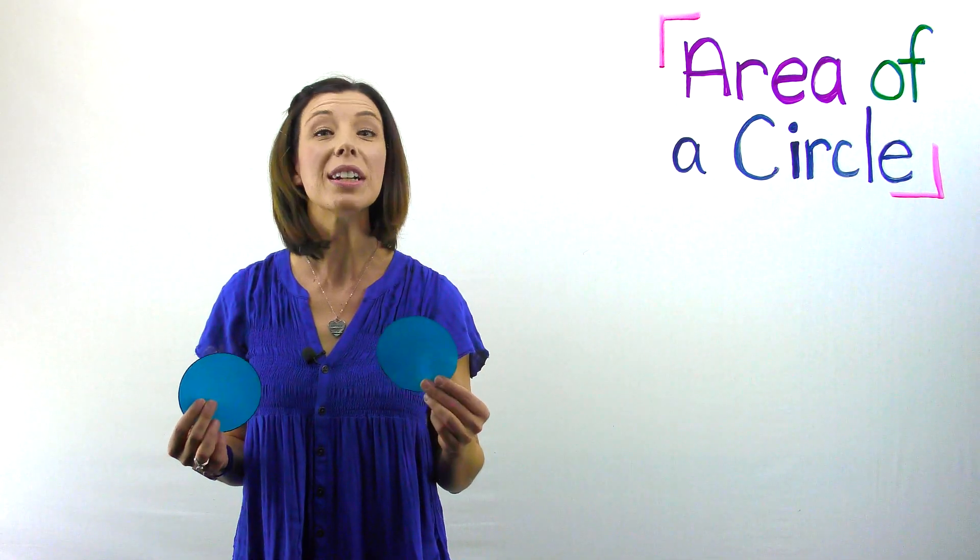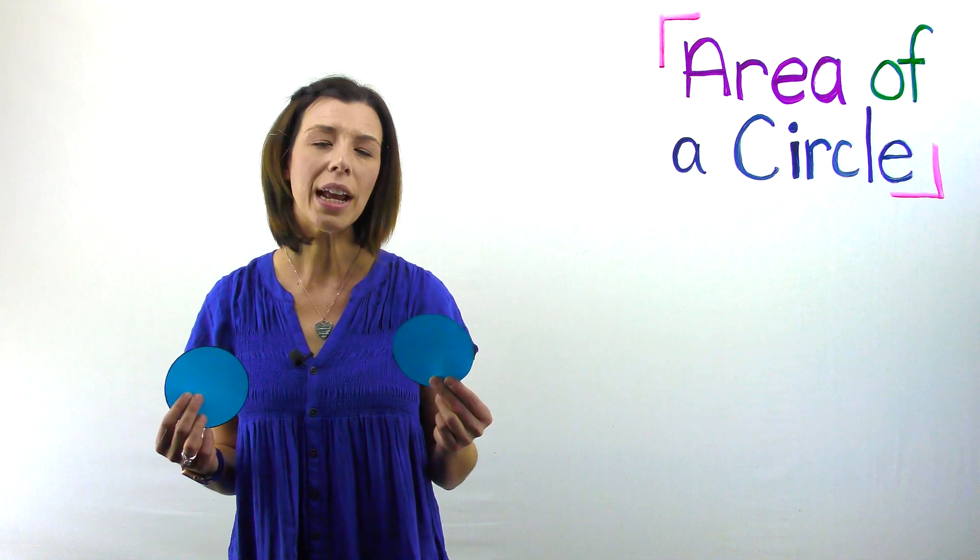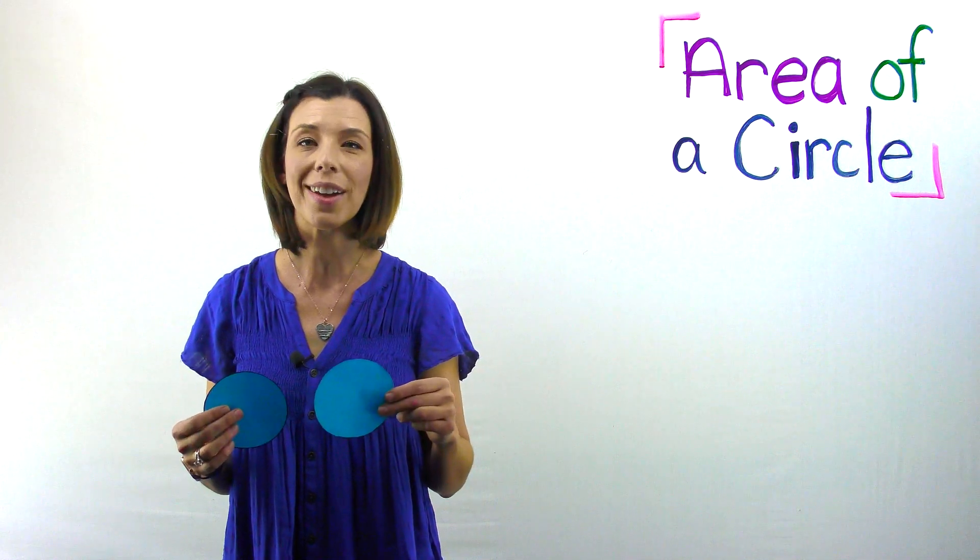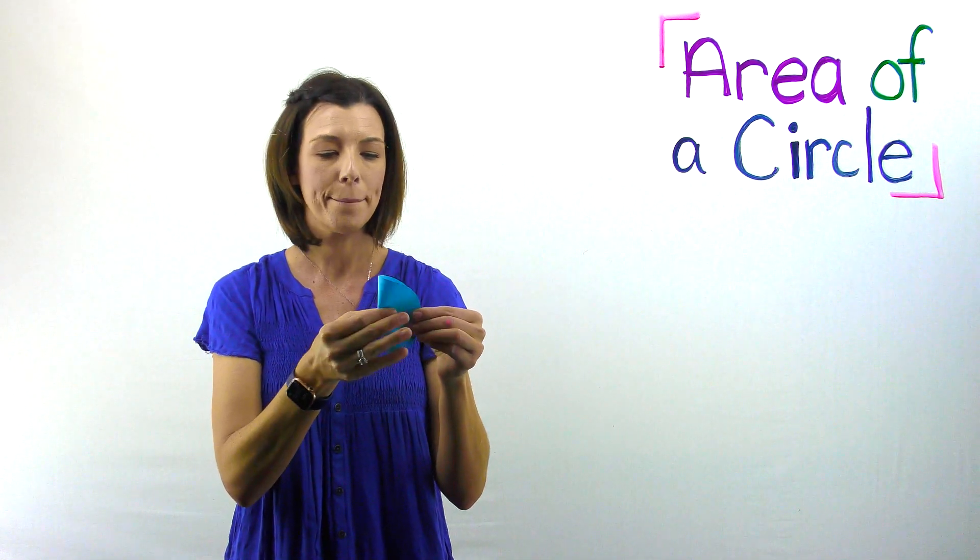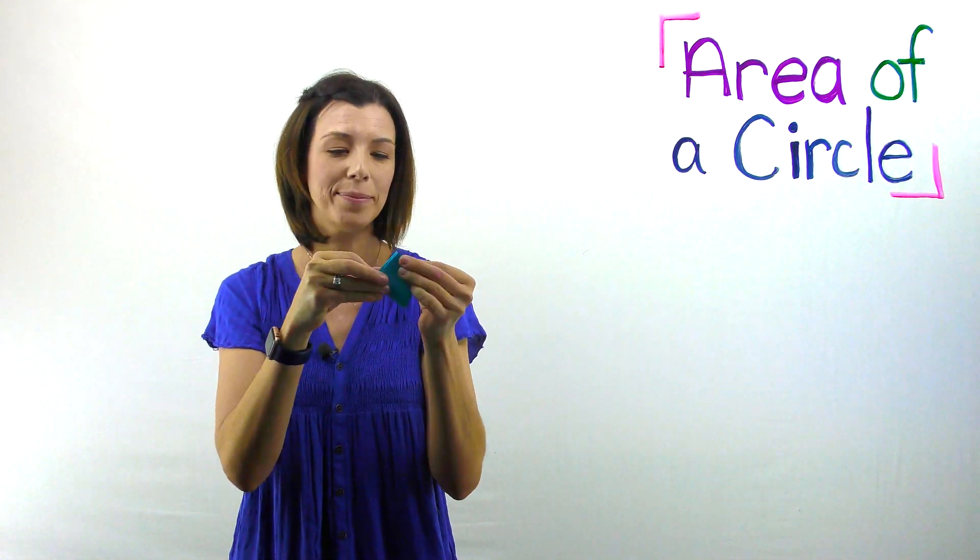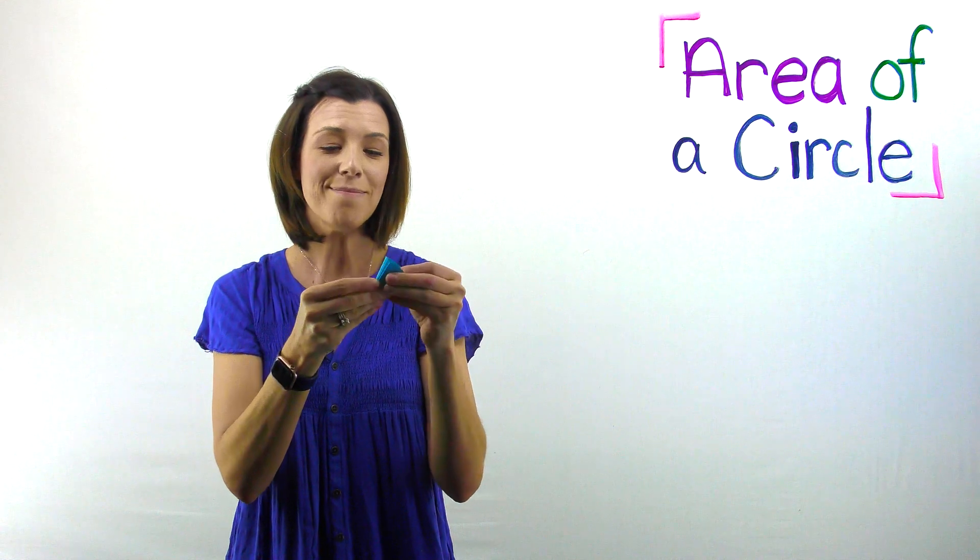The first thing we need to do is fold our circles. We're actually going to end up folding them the exact same way. Start by taking your circle and folding it in half, crease it. Now do it again, and again, and now do it one more time.